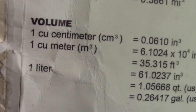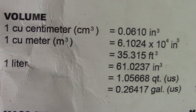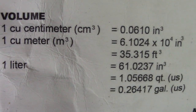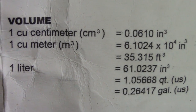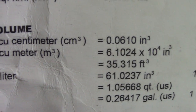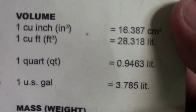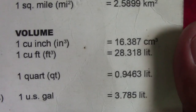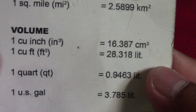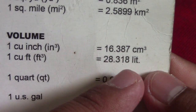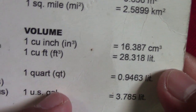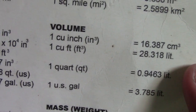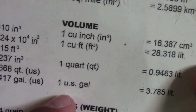Next is volume — just convert using these numbers. One cubic inch equals 16.38387 cubic centimeters. Multiply by the given factor. For liters and gallons: one US gallon equals 3.785 liters.